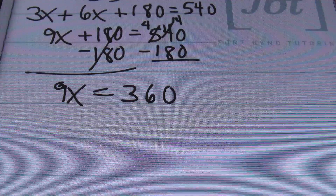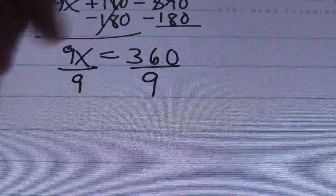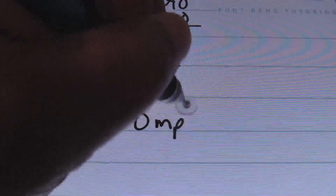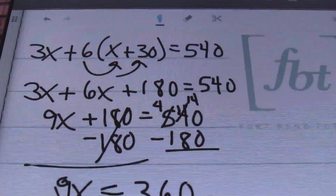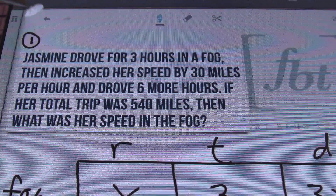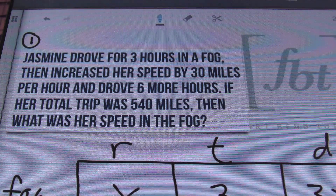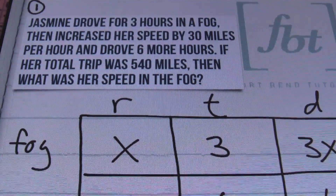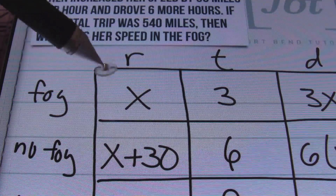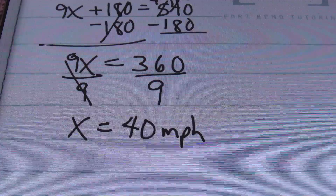From there, we're going to divide both sides by 9. We finally figure out that her rate in the fog was 40 miles per hour. The next thing we want to do is make sure we're answering the question. Going back to the original problem: it asks what was her speed in the fog? Her speed in the fog is the variable X, and that's going to be 40 miles per hour. That is our answer for problem number 1.